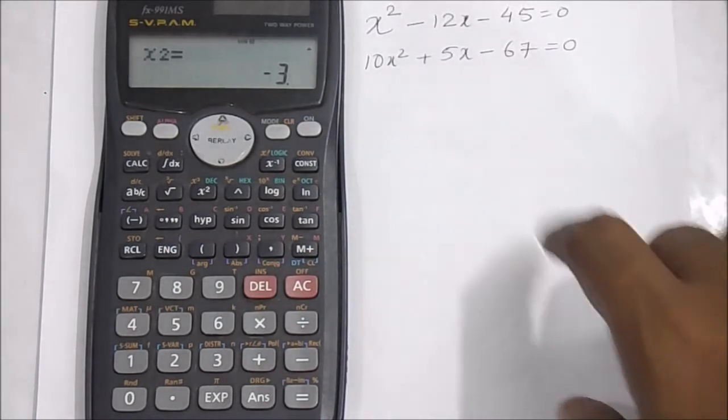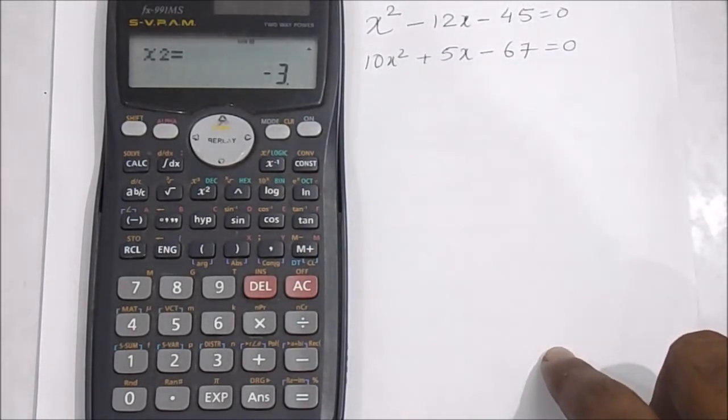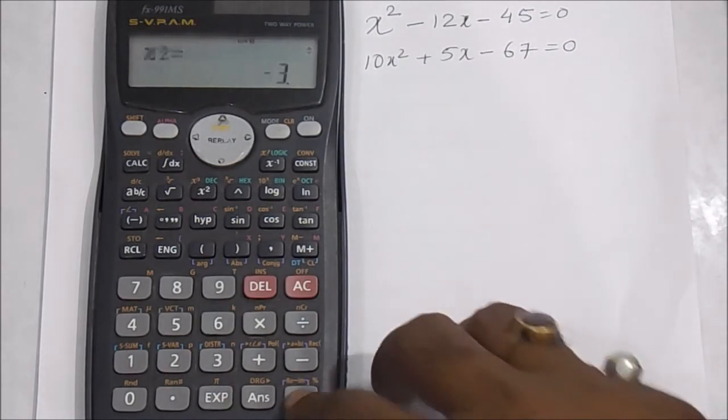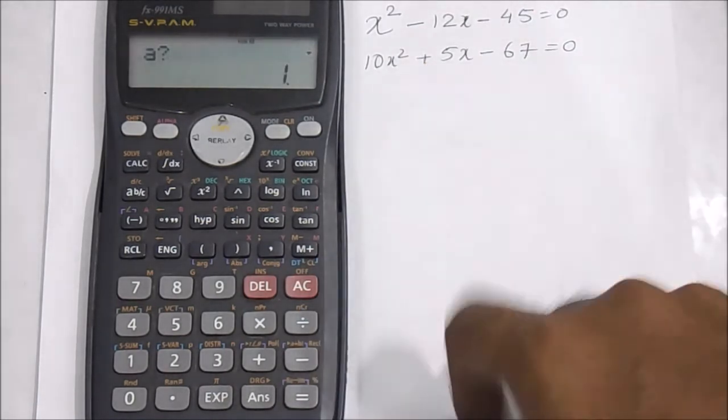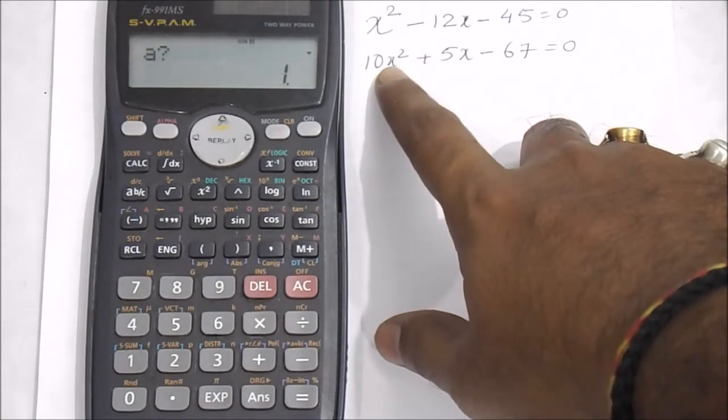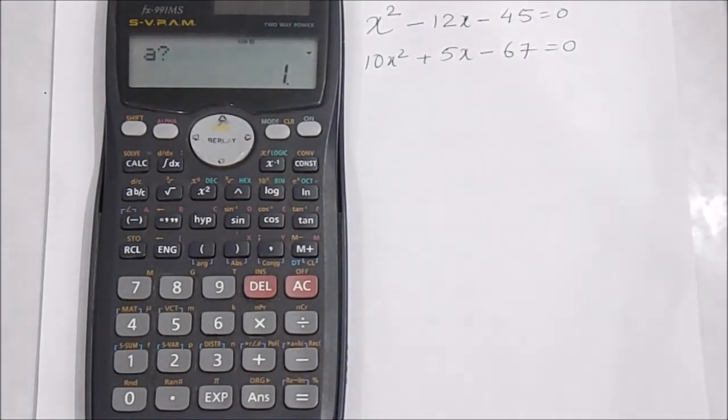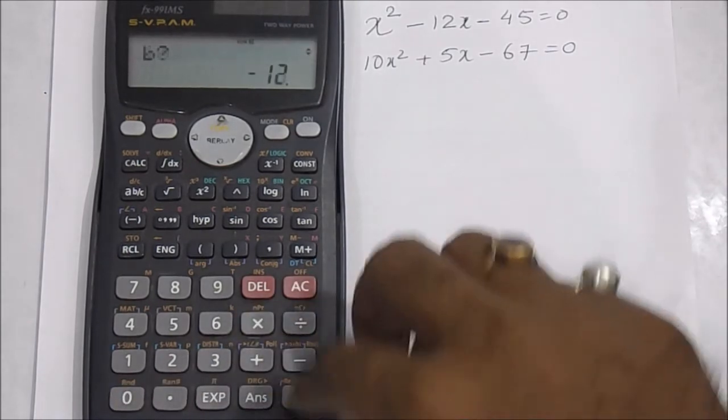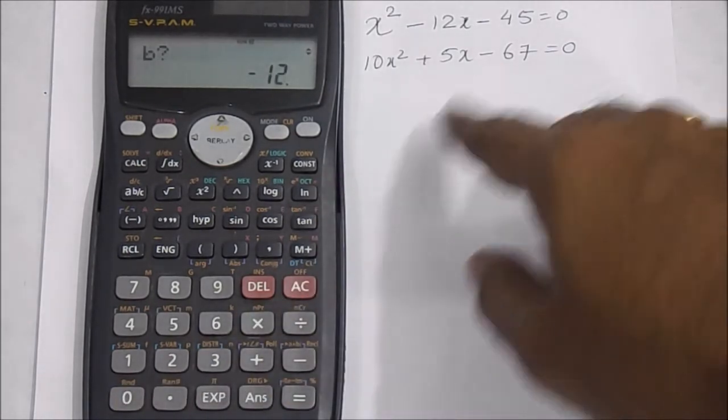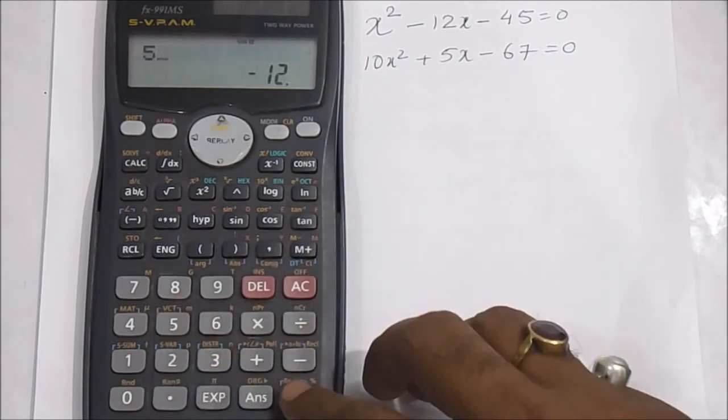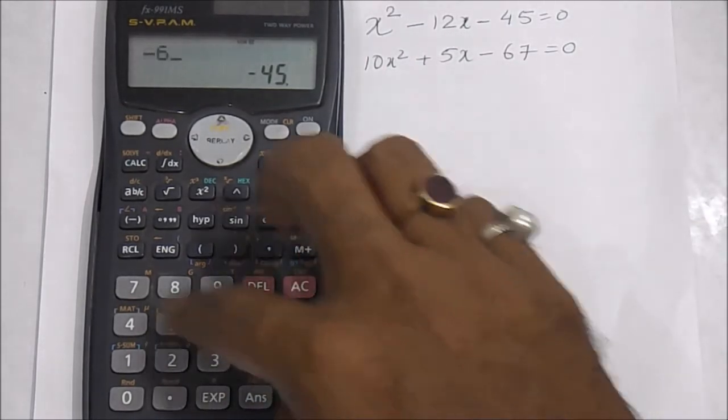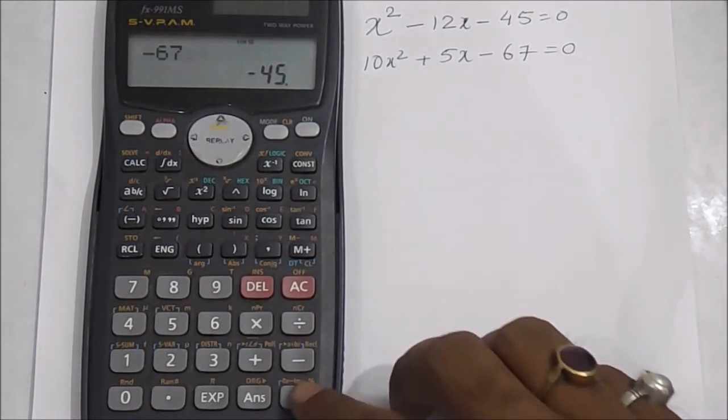For another example, let's solve 10x² + 5x - 67 = 0. Press equals again. The value of 'a' is 10, the coefficient of x². Press 10, then equals. 'b' is 5. Press 5, then equals.